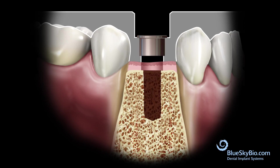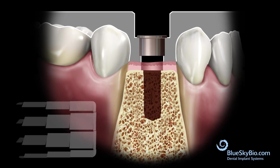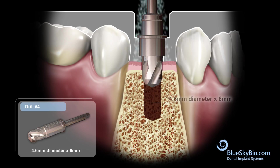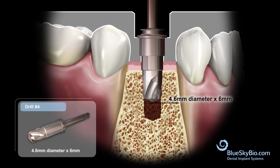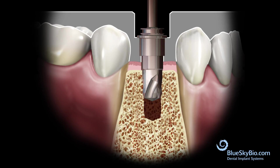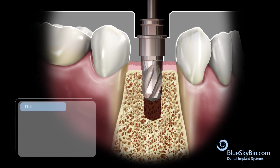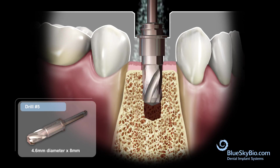If the bone is of normal or high density, the final drill diameter is used to complete the osteotomy. In this case it is a 4.6 millimeter wide drill. The 6 millimeter long drill is inserted until it is centered by the master tube — activate the drill and advance until stopped. The 8 millimeter long drill is then inserted until centered by the master tube — activate and advance until stopped by the master tube.